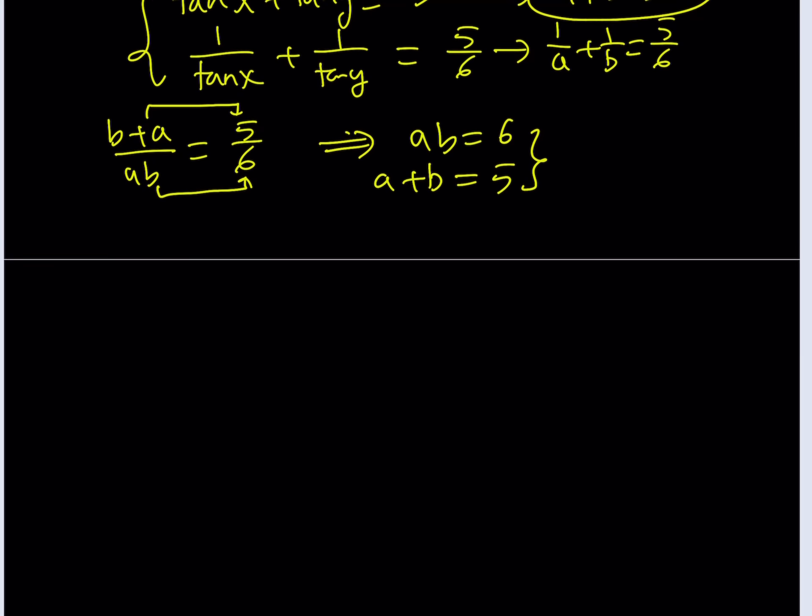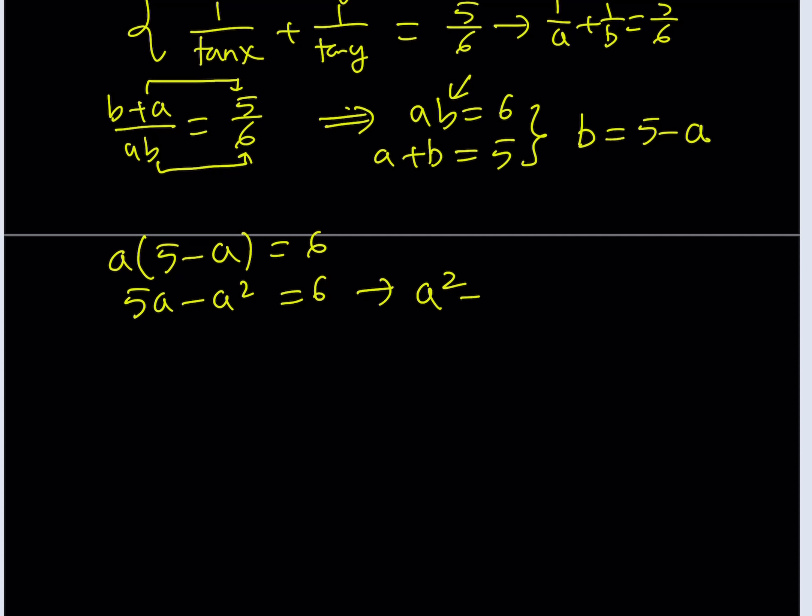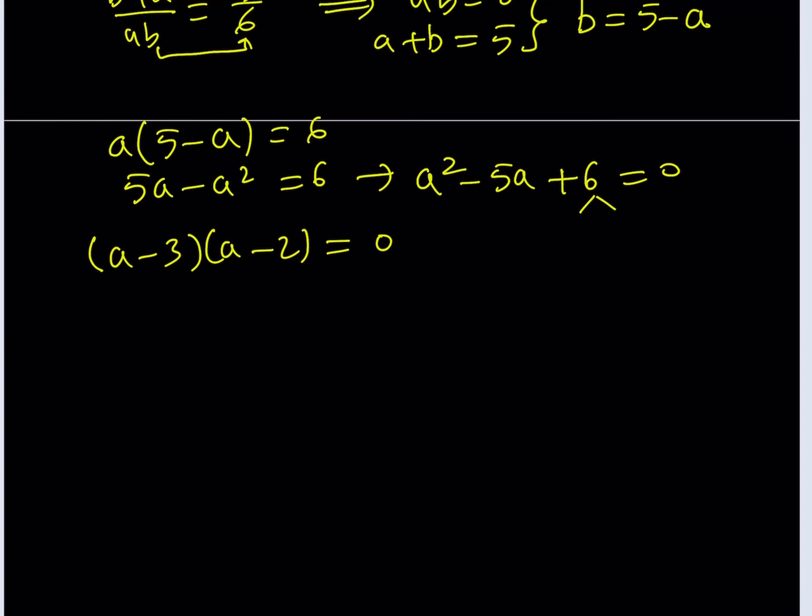So this system is quadratic. You can basically use substitution here, replace b with 5 minus a. We get a times 5 minus a equals 6, then 5a minus a squared equals 6. If you put everything on the positive side, a squared minus 5a plus 6 equals 0. This is a factorable trinomial. I can find two numbers whose product is 6 and whose sum is negative 5, and those numbers are negative 3 and negative 2. It can be written as a minus 3 times a minus 2 equals 0.